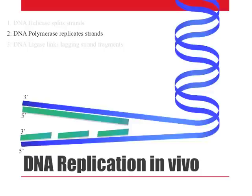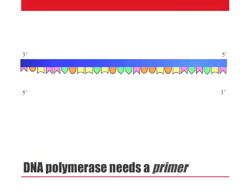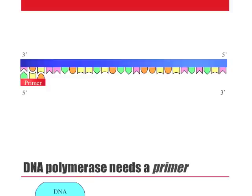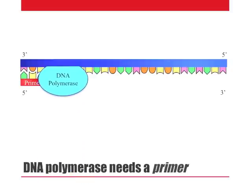Furthermore, it means that DNA polymerase cannot begin DNA synthesis from scratch, but instead requires a short primer — a sequence that serves as a starting point for replication. Once a primer has bound the DNA, DNA polymerase can begin to build the replicated sequence by extending off the primer's 3' end.